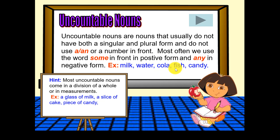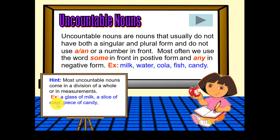Fish — anything like fish or meat or pork is uncountable. Candy is uncountable. So we usually use a container expression: a glass of milk, a slice of cake, a piece of candy. But we can also say some milk, some cake, some candy.